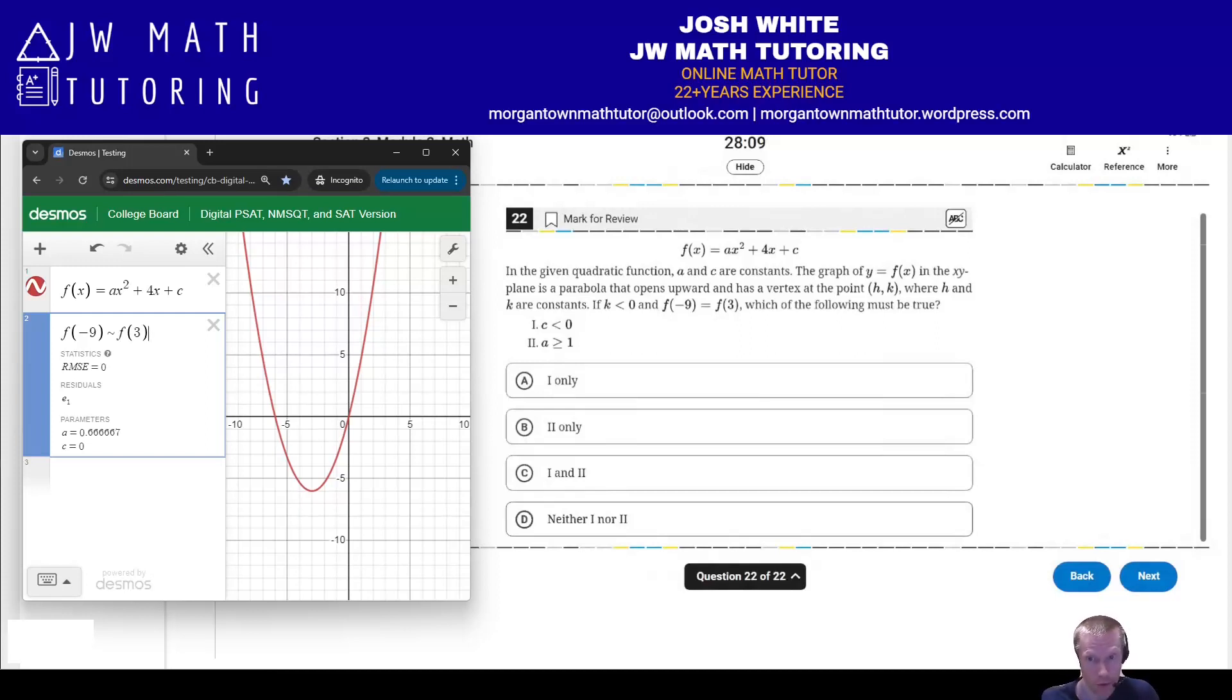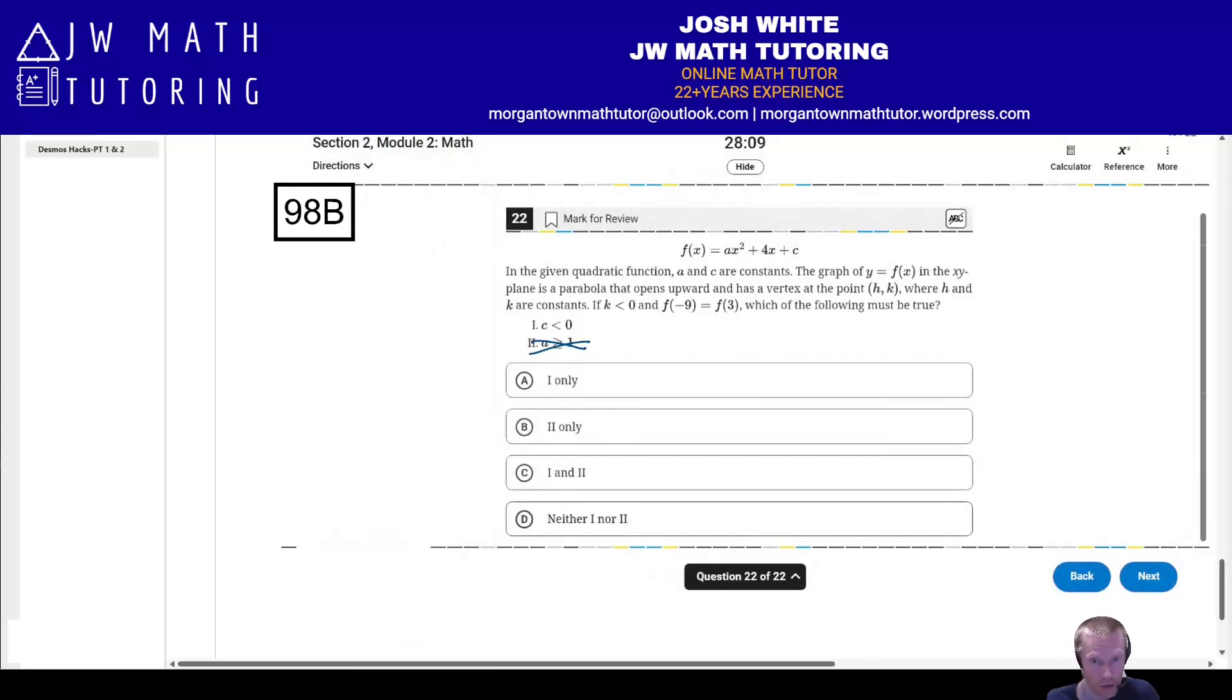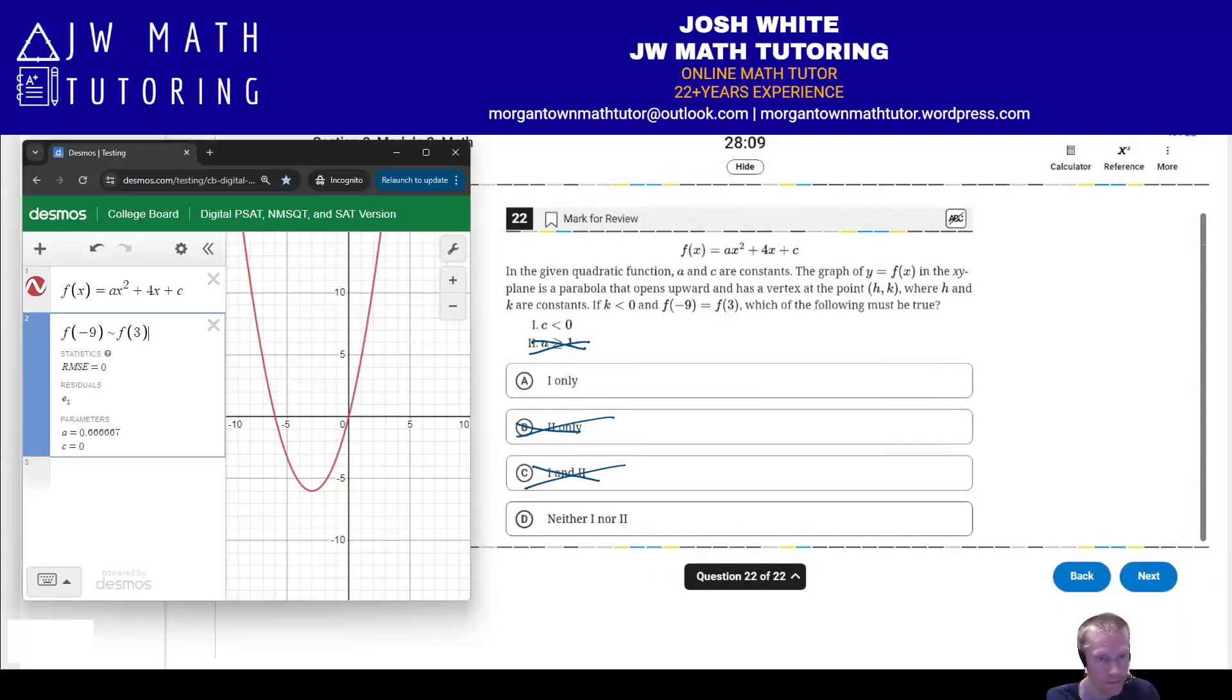So notice when I do that, it turns out that A must equal 0.66666667, or it's basically two-thirds. You could type that all out if you weren't sure. So does A have to be greater than or equal to 1? No. So 2 is not true. So we can get rid of that. We can get rid of that. All right. Now, let's go ahead and look at the C value. Does C have to be less than 0? So notice here in this little regression that I did, it gave me C equals 0. So it looks like that this one is not true at all. This one is not true either, number 1. So the correct answer is going to be D. But let's just confirm that by doing the following.